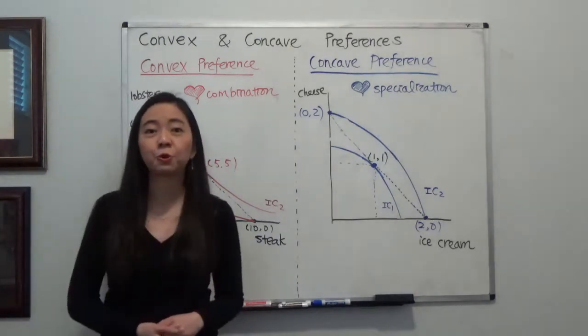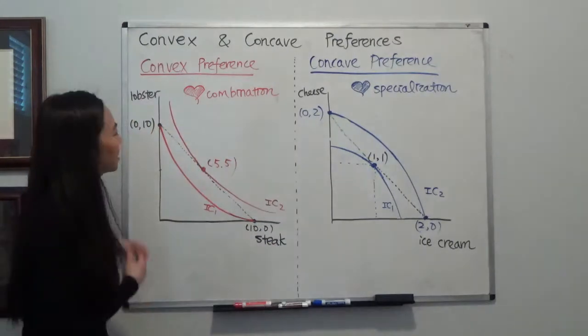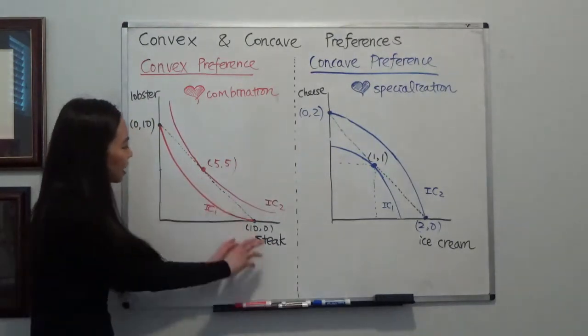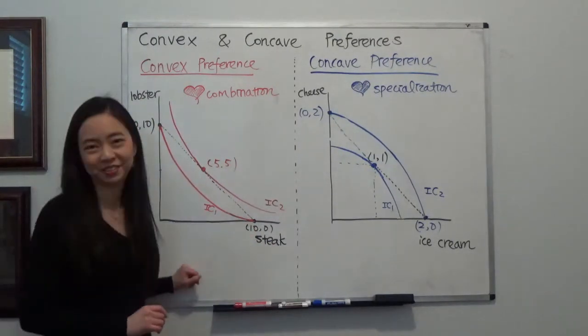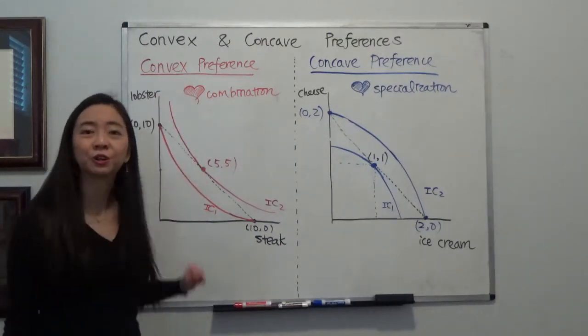Now, remember, you don't have to worry about the bill. So I believe a lot of you are going to choose, hey, I like a combination, a lobster steak combination, 5 oz each. In that case, you have a convex preference.